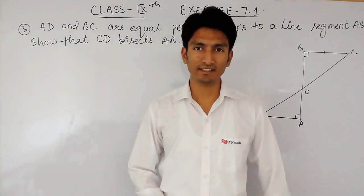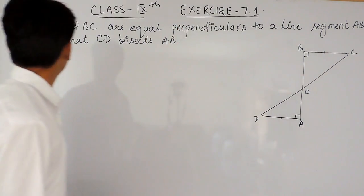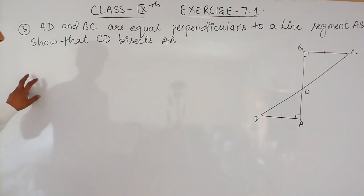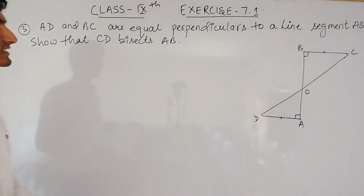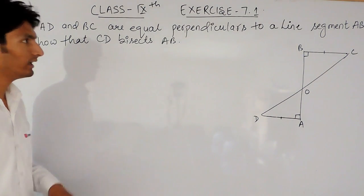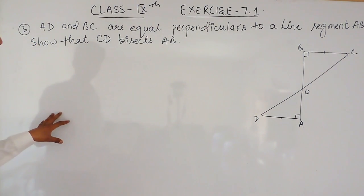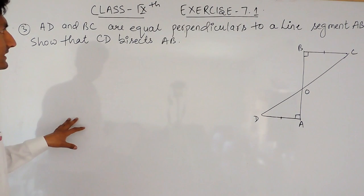Hello everyone. In this video we are going to solve question number 3 of exercise 7.1. The question says AD and BC are equal perpendiculars to a line segment AB.